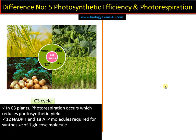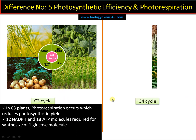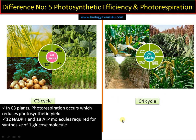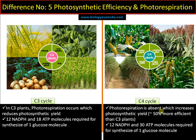Difference number five — photosynthetic efficiency and photorespiration. C3 cycle is for plants with sufficient water; photorespiration occurs, reducing photosynthetic efficiency. Twelve NADPH and 18 ATP molecules are required for synthesis of one glucose molecule. In C4 cycle, photorespiration is completely nullified or absent, which increases photosynthetic efficiency — C4 plants are approximately 50% more efficient than C3 plants. C4 plants are well adapted to survive in dry habitats.